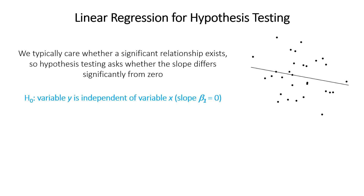With linear regression, our goal is often to determine if there is a significant relationship — that is, whether the slope differs significantly from zero. Our null hypothesis is that y is independent of x, meaning the slope is zero. Because our variables are random samples from a larger population, we'd expect to find some slope just due to randomness. The question is: how much can the slope differ from zero before we conclude it's too unlikely to be just random? If it's too different, we reject the null hypothesis.